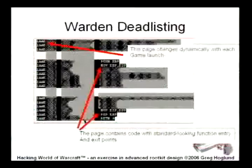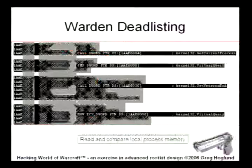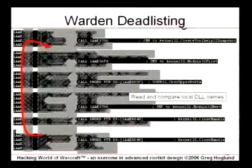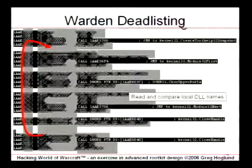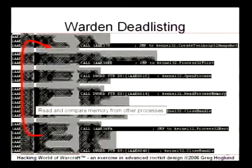Here's the dead listing for the Warden — again, I redacted this but left in enough so you can see what's going on. First of all, this slide is pointing out the Warden Client looks like regular function code — you can see a push EBP and at the bottom a regular return. So it's very easy to reverse engineer the Warden; it doesn't have anything weird. Here you can see the Warden code that goes through local process memory and scans all of it — GetCurrentProcess, VirtualQuery, etc. Here's the part that reads and compares all the local loaded DLL names looking for bad DLL names belonging to botting programs. Here it is going through all the external processes and comparing their names to a list of bad stuff. It's actually opening and reading all the memory out of the other processes on your system. And finally, here's the loop that goes through and enumerates all your windows and grabs all the window text.